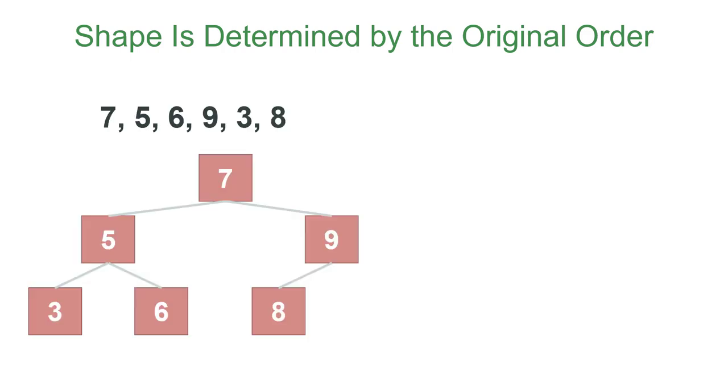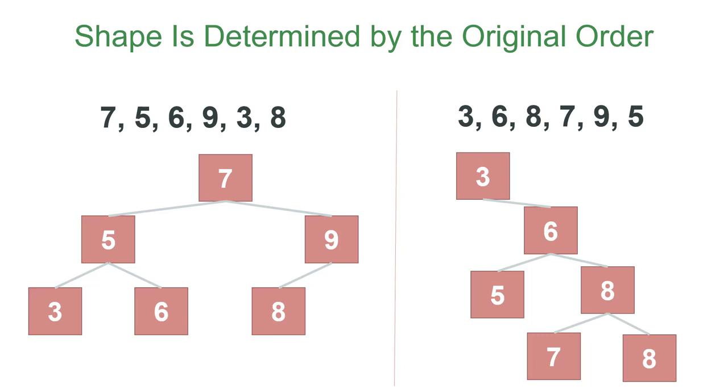Now, as we said before, the shape is determined by the original order in which we add the elements. So before, we saw the elements added 7, 5, 6, 9, 3, 8. However, if we added the same exact elements, but in a different order, we would have a binary search tree that had a different shape. And this is potentially a problem if you have a binary search tree that's not balanced, and that's something that you can remedy with techniques such as rotation, which is covered in a later video.